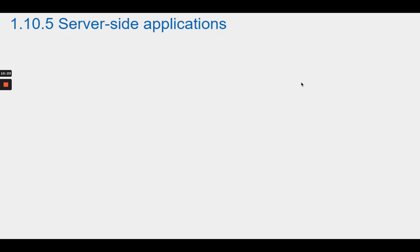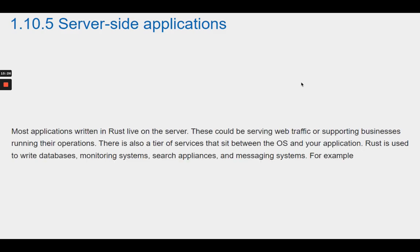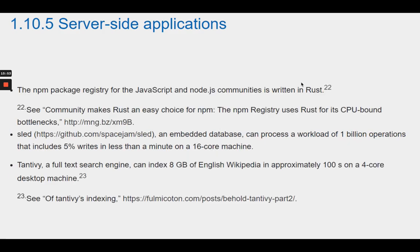Section 1.10.5 Server-Side Applications. Most applications written in Rust live on the server, serving web traffic or supporting businesses. There is also a tier of services that sit between the OS and your application. Rust is used to write databases, monitoring systems, search appliances, and messaging systems. For example, the npm package registry for the JavaScript and Node.js communities is written in Rust. The npm registry uses Rust for its CPU-bound bottlenecks.